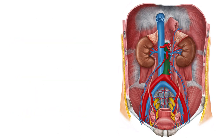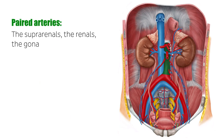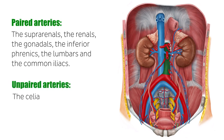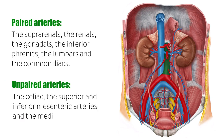Of these arteries, the paired arteries are as follows: the supra-renals, the renals, the gonadals, the inferior phrenics, the lumbars, and the common iliacs. The celiac, the superior and inferior mesenteric arteries, and the median sacral are unpaired.